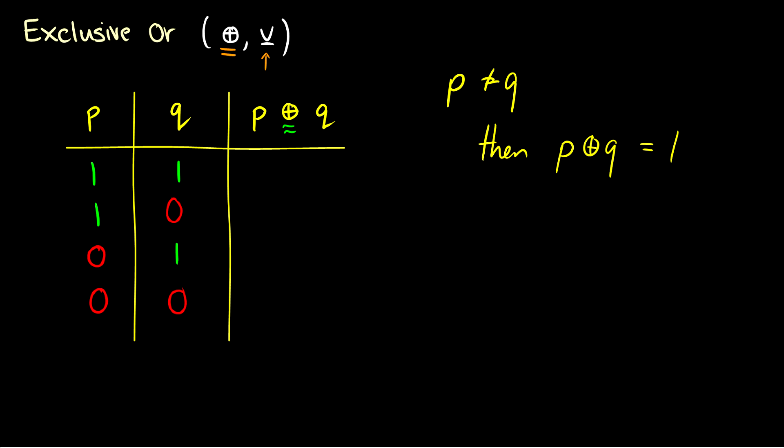So it's just the opposite of the biconditional. So p true and q true means that p exclusive OR q is false. And similarly, if they're both false, then that also outputs a false. But if the values are different, such as in rows two and three, we get true.